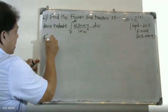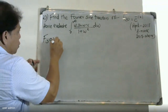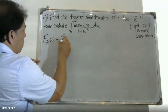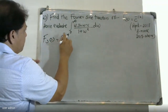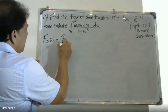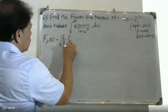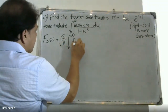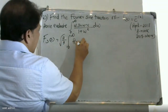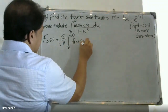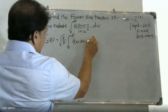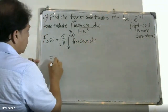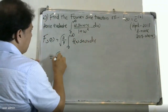First, we have to find the Fourier sine transform. The formula for the Fourier sine transform is: F_s(s) = root of 2 by pi, integral from 0 to infinity of f(x) sine(sx) dx.